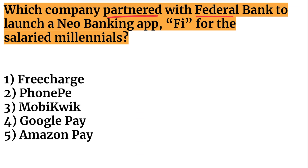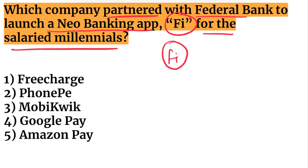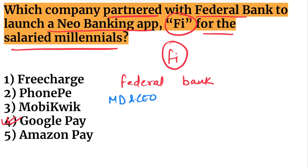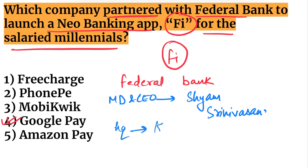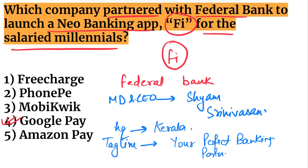Which company partnered with Federal Bank to launch a new neobanking app called 'Fi' for salaried millennials? The answer is Google Pay. Regarding Federal Bank: the MD and CEO is Shyam Srinivasan, the headquarters is in Kerala, and the tagline is 'Your Perfect Banking Partner.'